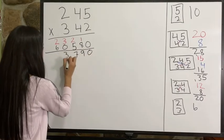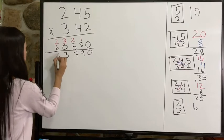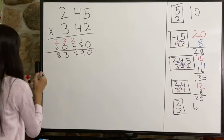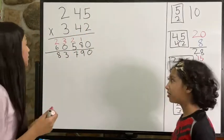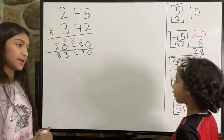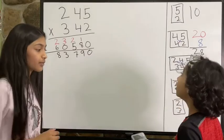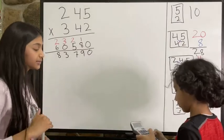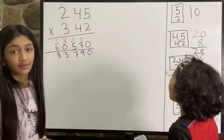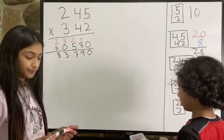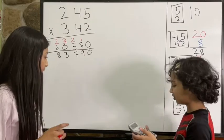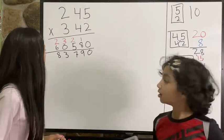And then I'm going to add it all up. Zero, nine, seven, three, three and eight. So will you please check my answer? Two hundred forty-five times two hundred forty-two equals eighty-three thousand seven hundred ninety. This is the correct answer.